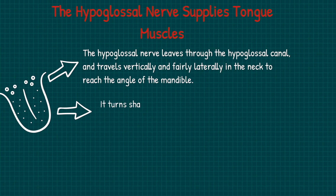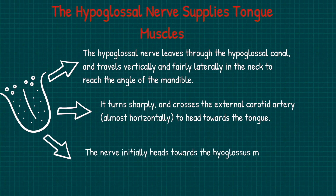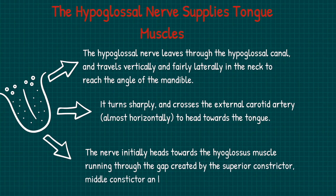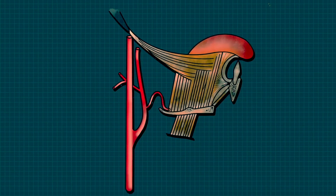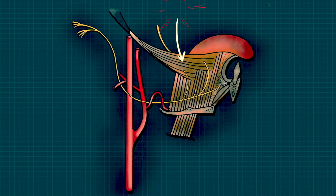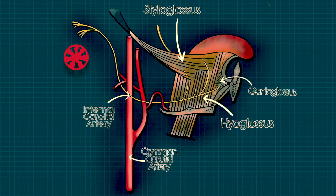It then turns sharply and crosses the external carotid artery to head towards the tongue. The nerve initially heads towards the hyoglossus muscle, running through a gap created between the superior constrictor, middle constrictor, and mylohyoid muscles. You can see this part of the hypoglossal nerve outlined in this diagram, along with how it relates to and supplies some of the anatomical structures surrounding it and its course.